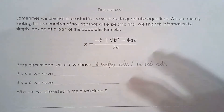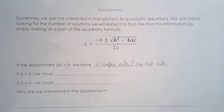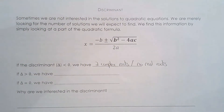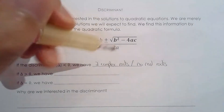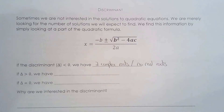You can say two complex roots, or you can say no real roots — both are acceptable. In grade 10 we generally care about real roots, so if you see a negative discriminant, tell yourself there are no real roots. You won't get a real number as a solution. But I want to emphasize: there are still two roots — they're just not real numbers.